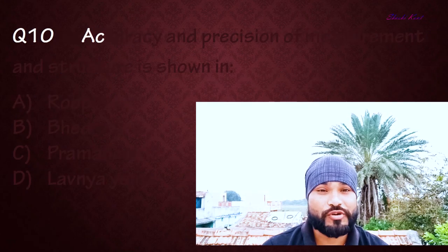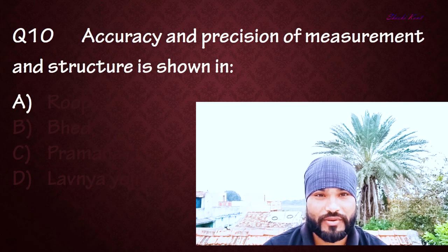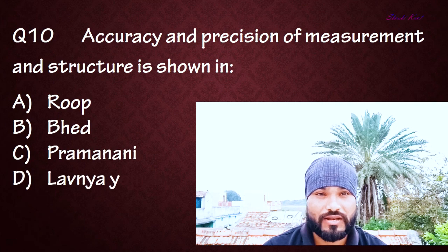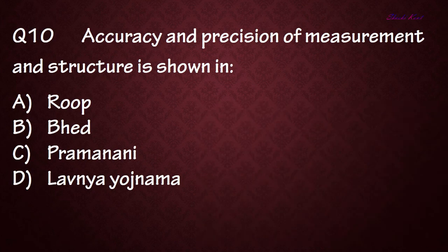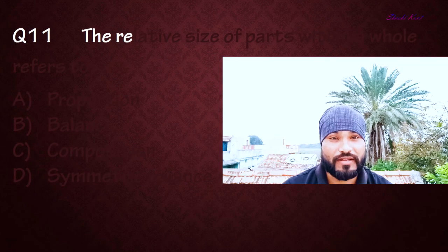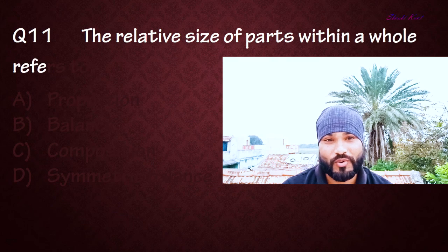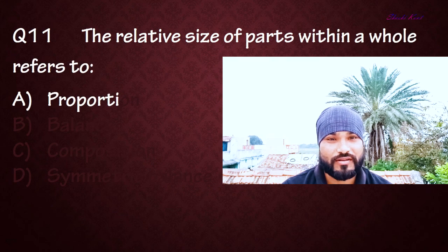Question number ten: Accuracy and precision of measurement and structure is shown in — Option A: Roop, Option B: Prakriti, Option C: Pramanani, Option D: Lavanya Yojana. The correct answer is C: Pramanani.